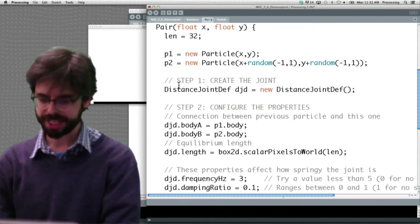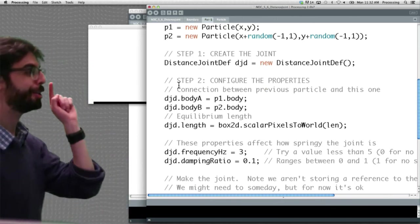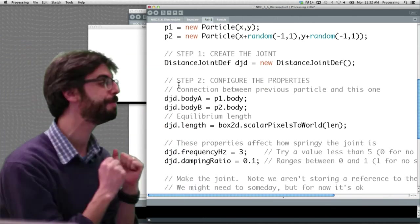We said is configure the properties. And one of the things we see here is that, remember, a joint, the whole point of a joint is that it connects to Box2D bodies.